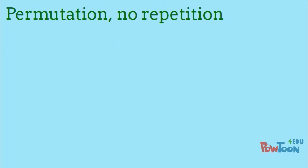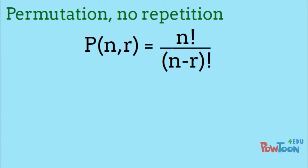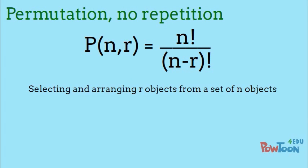This hints at the formula for permutations without repetition. Written as follows and read as permutation n choose r, it calculates the number of permutations when selecting and arranging r objects from a set of n.